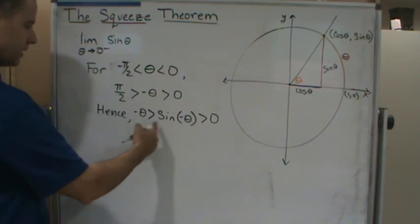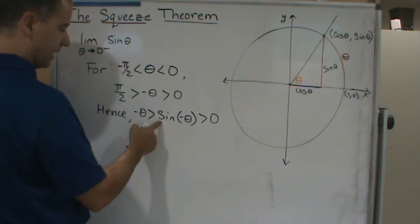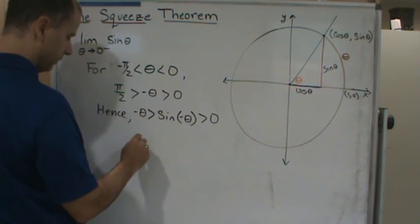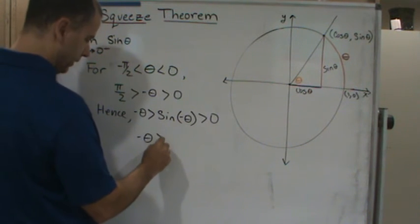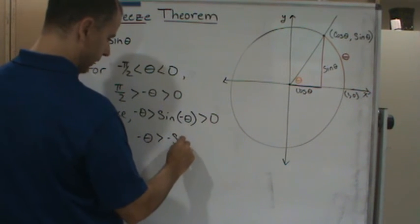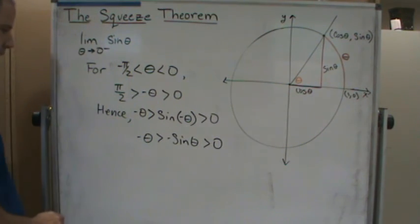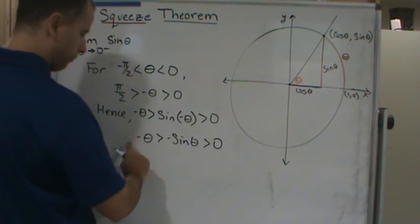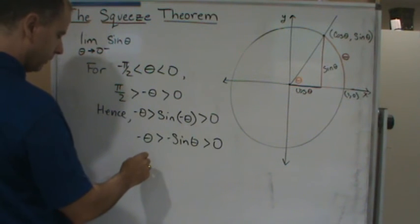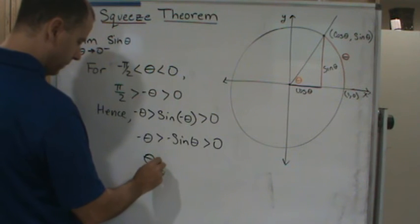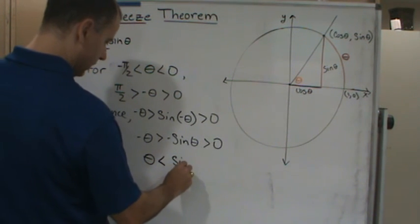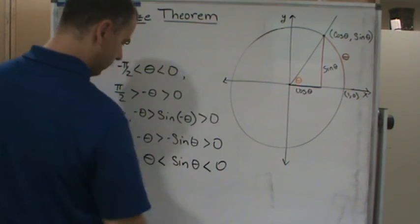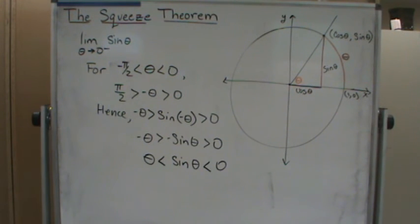Consequently, because sine of negative theta equals negative sine theta, we get that negative theta is greater than negative sine theta, which is greater than zero. Multiplying everything by negative one, we get that negative theta is less than sine theta, which is less than zero — which is right back to the same form of inequality we started with. An application of the squeeze theorem produces the same result.